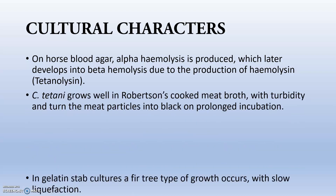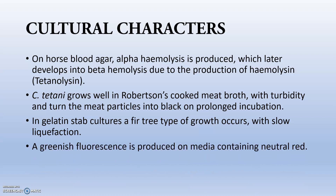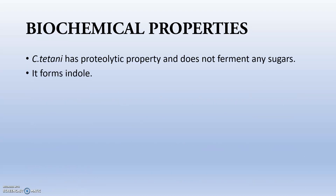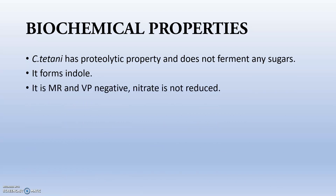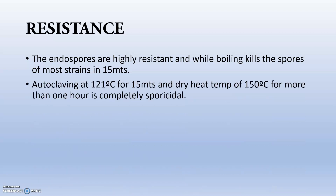On horse blood agar, alpha hemolysis is produced which later develops into beta hemolysis due to the production of hemolysin known as tetanolysin. In Robertson's cooked meat broth and gelatin stab cultures, a fir tree type of growth is produced — compared to Bacillus anthracis, which shows an inverted fir tree appearance because it is aerobic. Greenish fluorescence is produced on media containing neutral red. Biochemically, Clostridium tetani is proteolytic but does not ferment any sugars. It is indole positive, MR and VP negative, and nitrite test negative. The endospores are highly resistant: boiling kills spores mostly in 15 minutes; autoclaving at 120°C for 15 minutes and dry heat at 150°C for more than one hour are completely sporicidal.